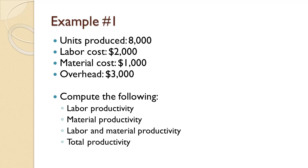In this example, 8,000 units were produced. The costs were $2,000 for labor, $1,000 for material, and $3,000 for overhead. We wish to compute labor and material single factor productivity measures, the labor and material multi-factor productivity measure, and total productivity.